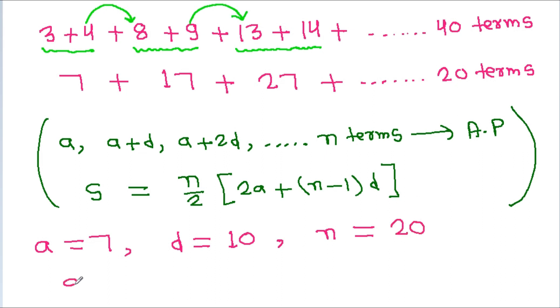And number of terms n is equal to 20. So sum will be equal to 20 by 2 times 2 into a is 7 plus n is 20 minus 1 times d is 10.